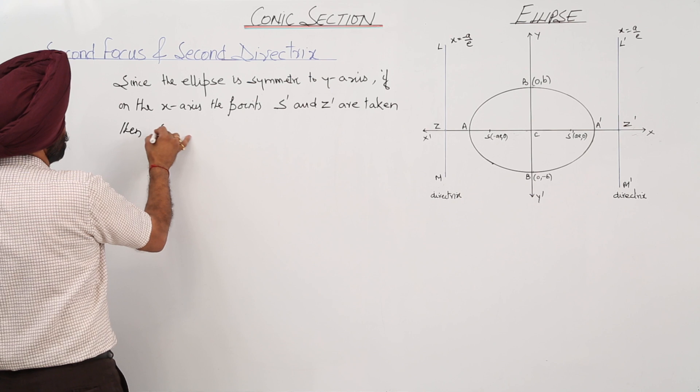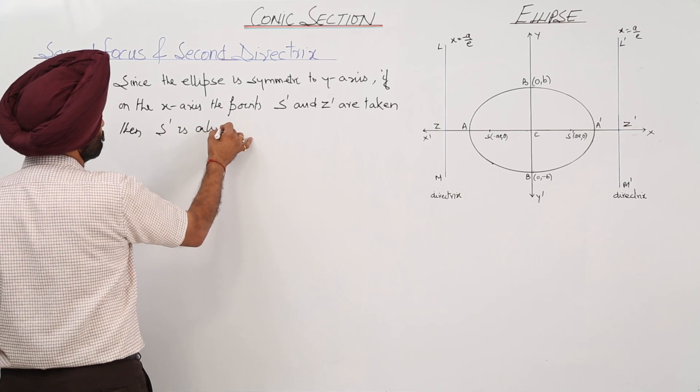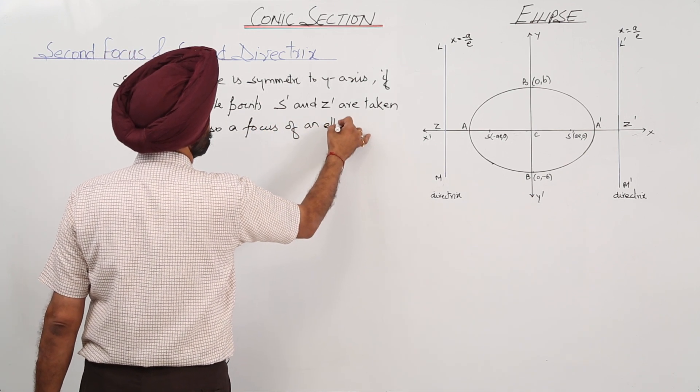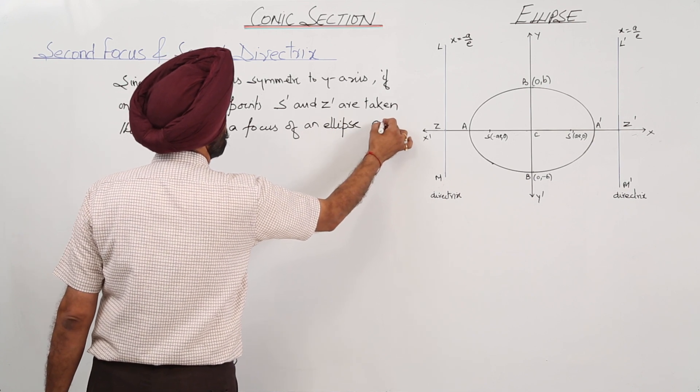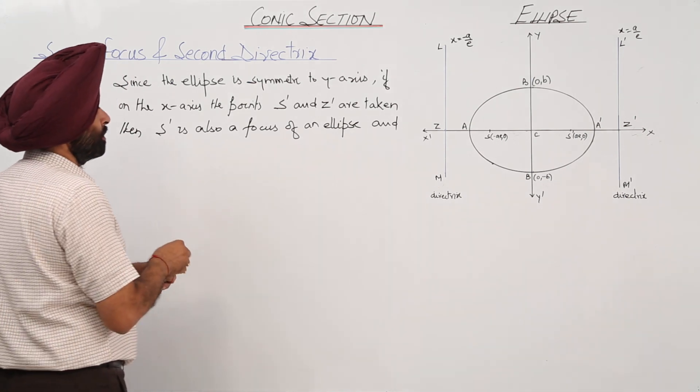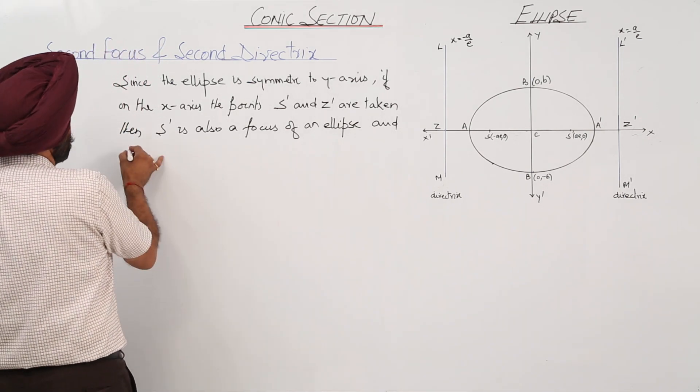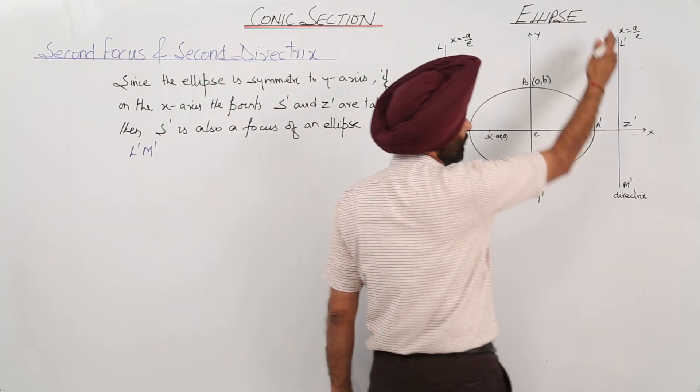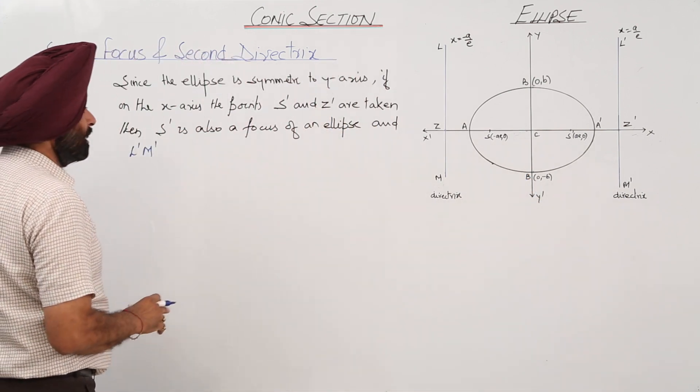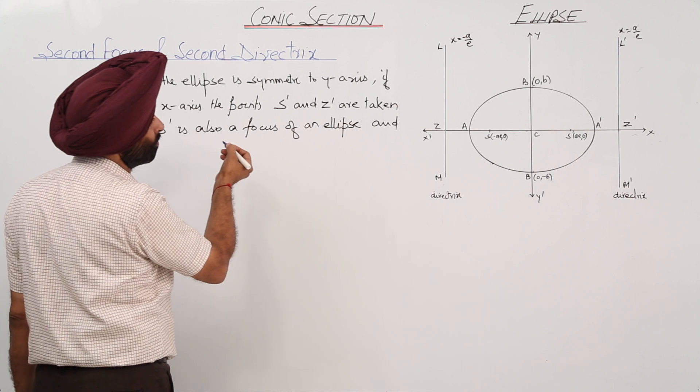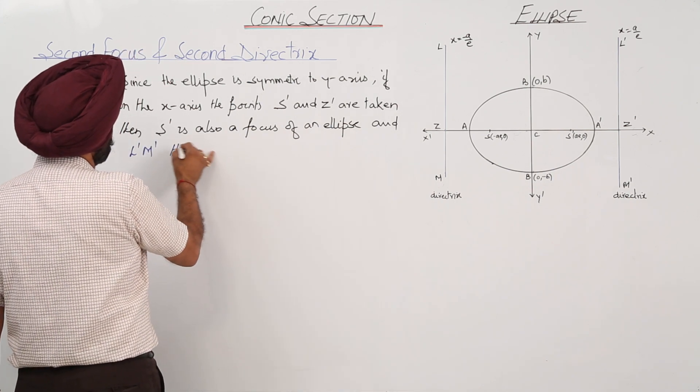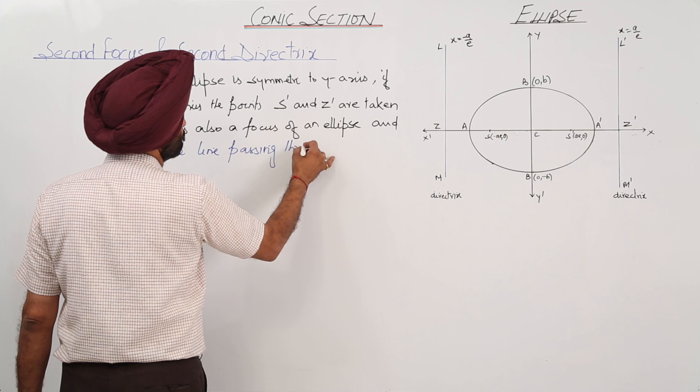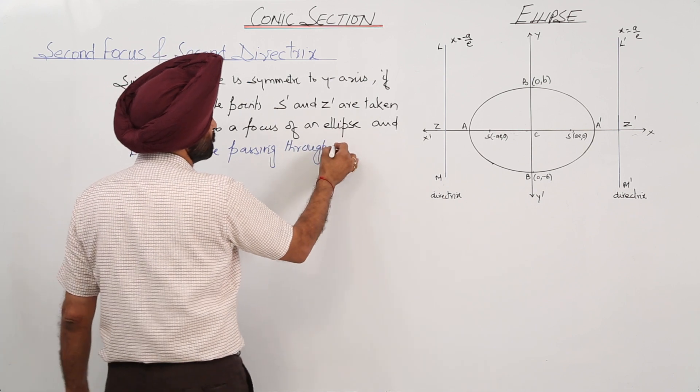Then S dash is also a focus of an ellipse. And L dash M dash, this point, L dash M dash means this straight line. And L dash M dash the line passing through Z dash.